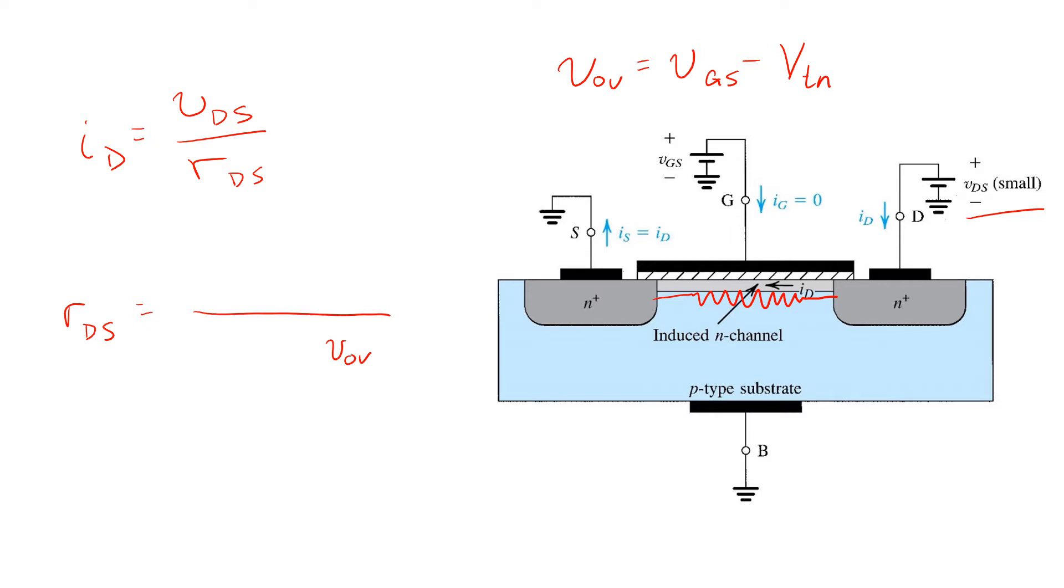Now, the overdrive voltage and the charge density in the channel region are related by the per-unit area gate capacitance, also known as the specific capacitance, C-ox of the gate.